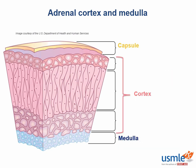What germ layers are the cortex and medulla derived from? The cortex is derived from mesoderm, and the medulla — which acts almost like a postganglionic sympathetic nerve — is derived from ectoderm, specifically neural crest.